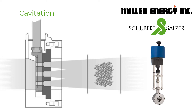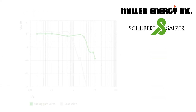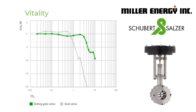Sliding gate valves are significantly faster than conventional control valves. This can be shown using the frequency response, where the set point value to a positioner is taken as the input value and the resulting stroke amplitude is the output value. The progression of the frequency response affects the standard of control of the entire control circuit.